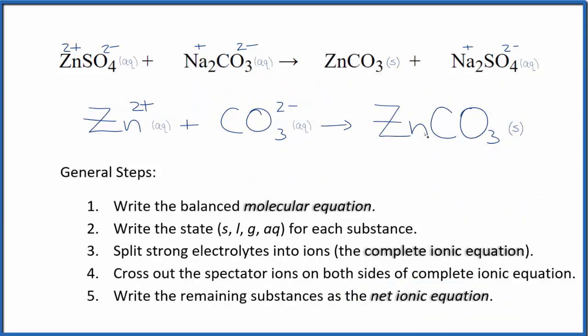So this is the balanced net ionic equation for ZnSO4 plus Na2CO3. You see the atoms, they all are balanced out here. And if you look at the charge, it's also balanced. Two plus, two minus gives us a net charge of zero. Over here, it's neutral, net charge of zero. So charge is the same on both sides.